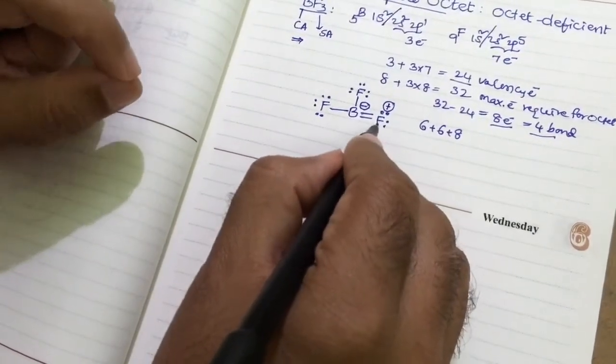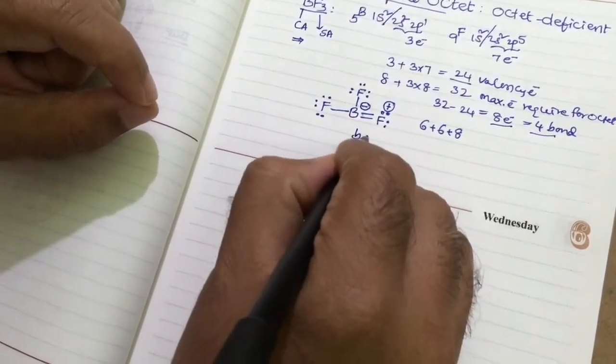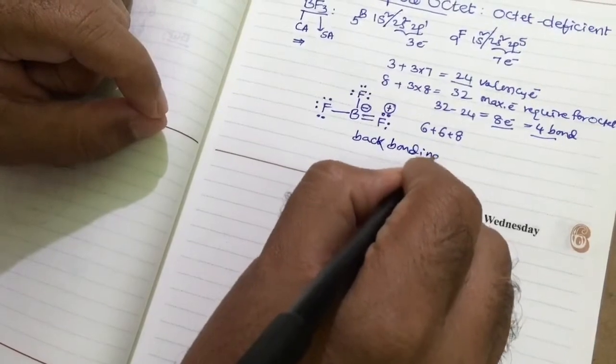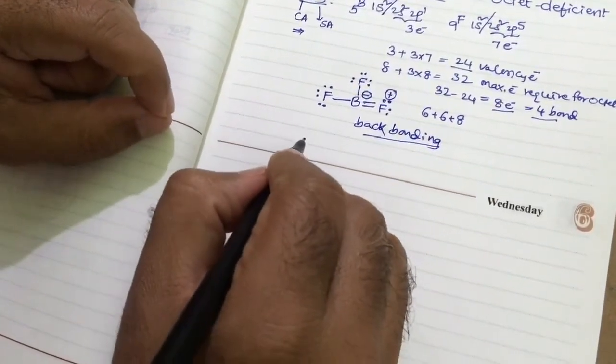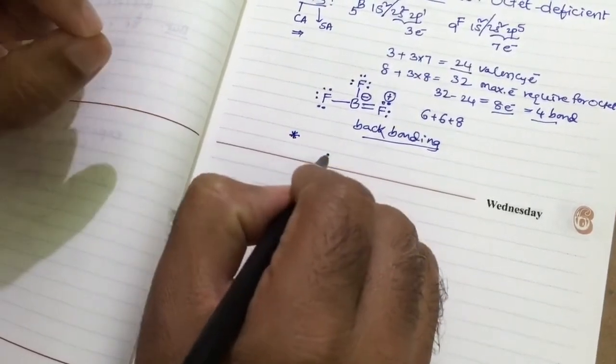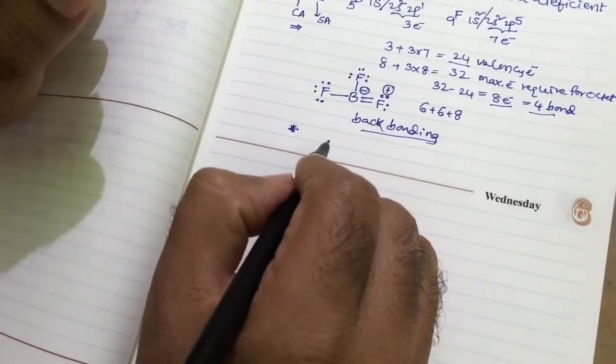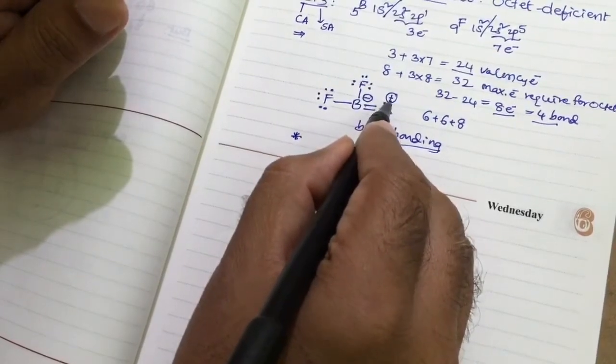Meaning what is that? The fluorine given electron to boron. This is called back bonding. Then only this boron will stabilize according to octet. But we know that a Lewis structure with 0 or lower formal charge, that is more stable. Now it is having formal charge negative and formal charge positive.